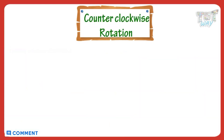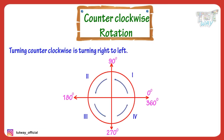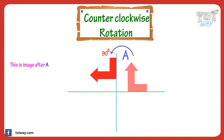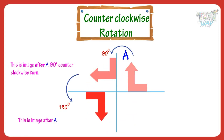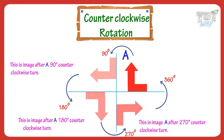Now let's see counterclockwise rotation. Turning counterclockwise is turning right to left. This is image A after a transformation of 90 degree counterclockwise turn or rotation. This is image A after a transformation of 180 degree counterclockwise turn or rotation. This is image A after a 360 degree counterclockwise turn or rotation. On 360 degrees counterclockwise turn, we get the same image.